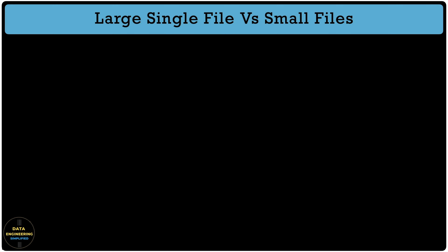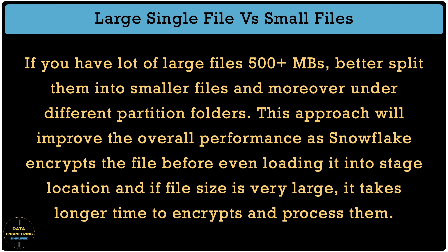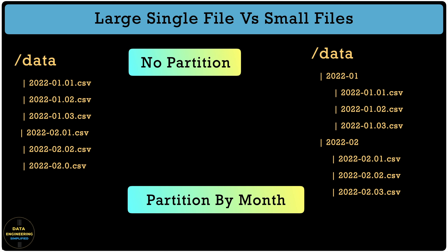Let's talk about large single file versus small file guidelines. If you have large files with 500 MB or more, it's better to split them into smaller files and place them under different partition folders if applicable. This approach improves overall performance, as Snowflake encrypts the file before loading it into a stage location — if the file is very large, it takes longer to encrypt and process. Moving large files over the network from external stages is also very expensive. Looking at the example: the non-partitioned data on the left versus month-partitioned data on the right — while the total data size is the same, the partitioned data will be processed faster. The difference is noticeable for large data files.